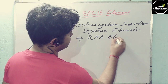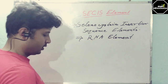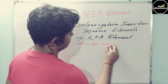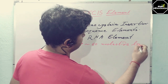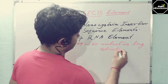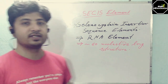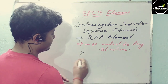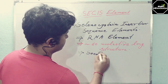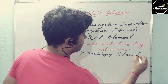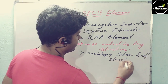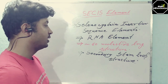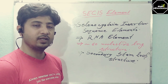The nature of the SECIS element is RNA. It is almost 16 nucleotides long, and it stays in the form of a secondary stem-loop structure. So the SECIS element consists of approximately 16 nucleotides arranged in a secondary stem-loop structure, which helps to maintain its functionality.